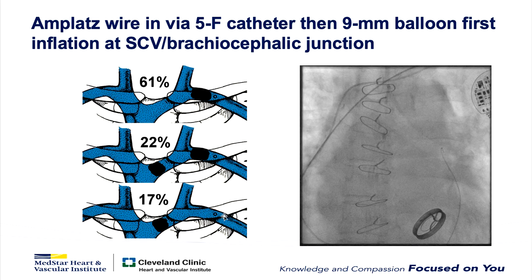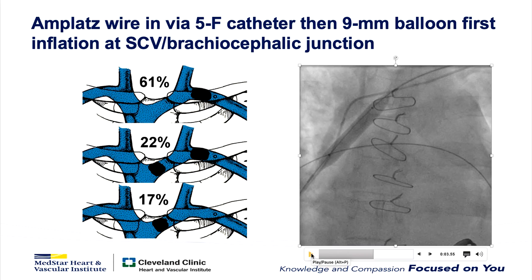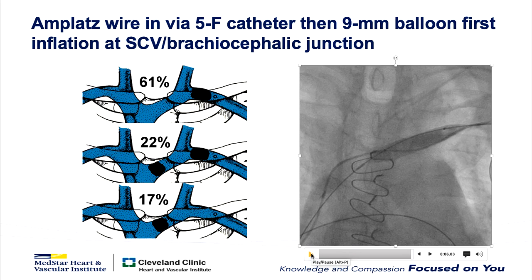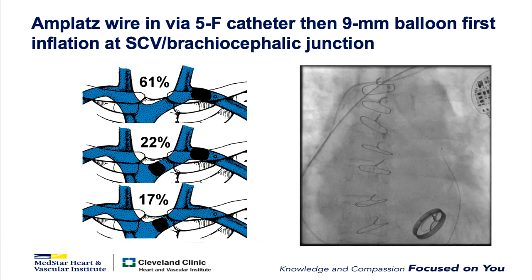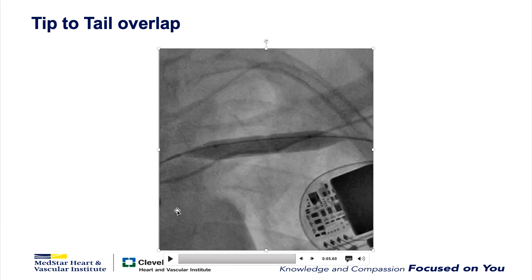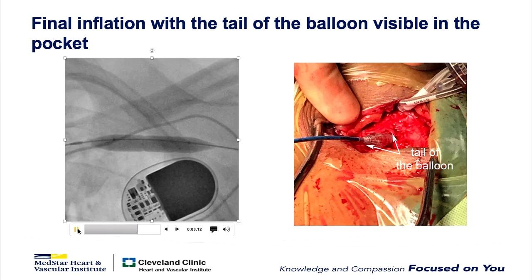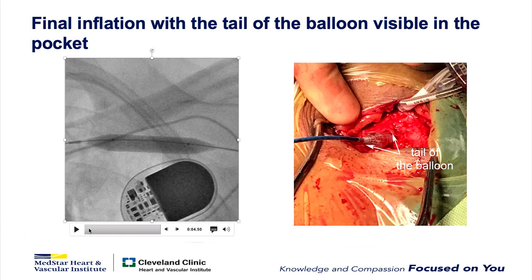The next step is dilatation. It's important to remember there's often a second occlusion when you treat the first. Take your balloon out to the innominate-SVC junction, do your first inflation, then gently pull it back if there's no waist until you encounter the occlusion. Deflate the balloon, bring it back, and do a head-to-tail overlap, inflating until all waists are gone. Inflate just long enough for the waist to disappear and pressure to stabilize. Ensure the final inflation has the tail of the balloon visible in the pocket — this is safe and doesn't cause bleeding, though a hemostatic suture can be placed if needed.